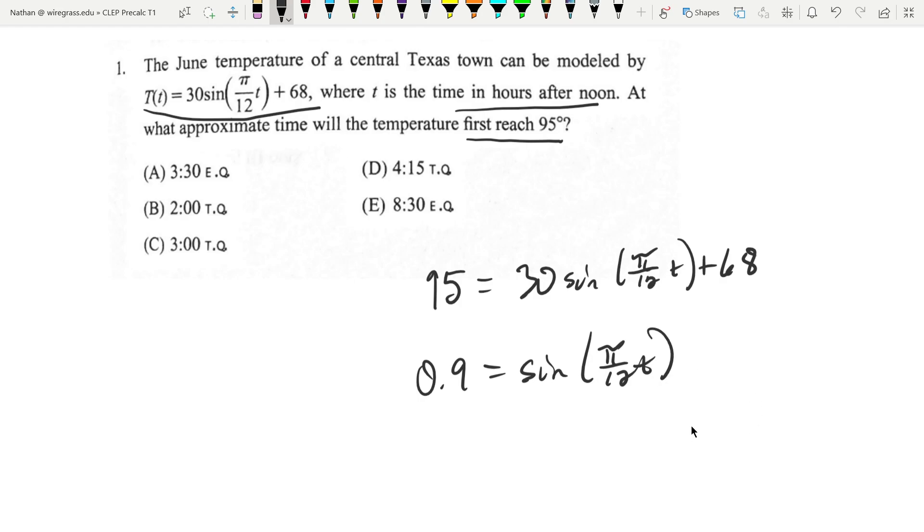And now we just need to take the arc sine of both sides. So doing that, in radians, it's going to give us 1.1198 approximately equals pi over 12 times T.